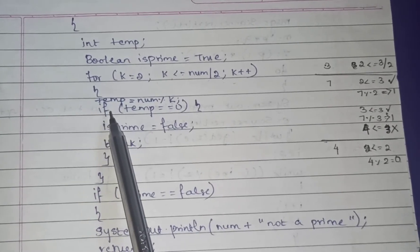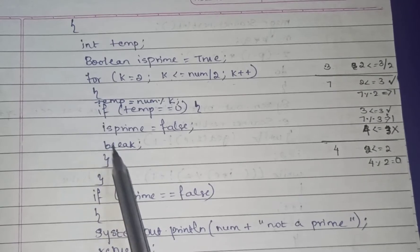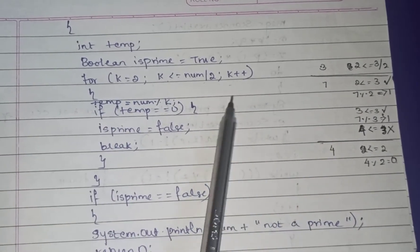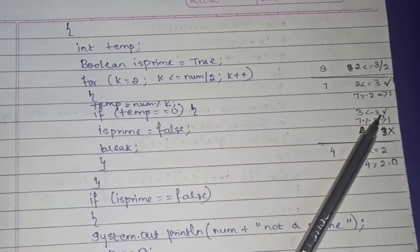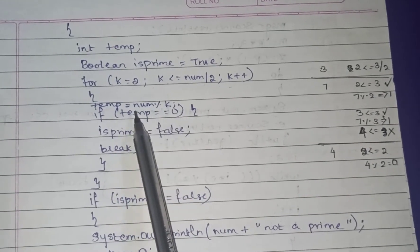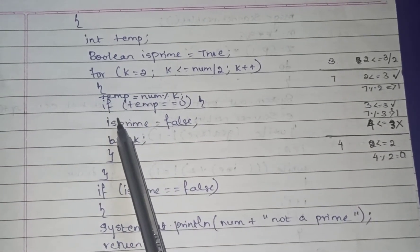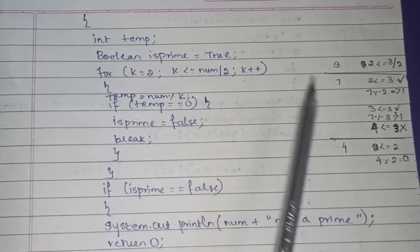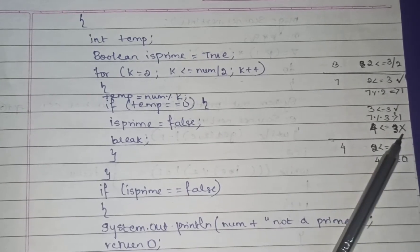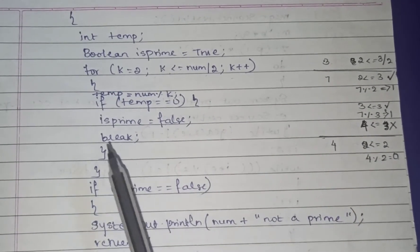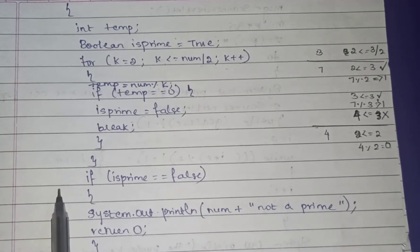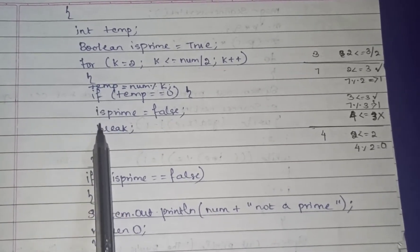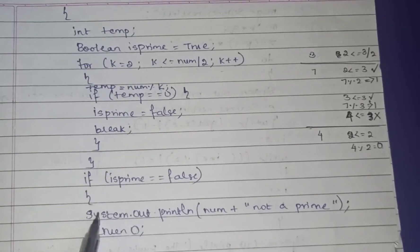The loop continues: k increments to 3, and 3 <= 3 is true. temp = 7 mod 3 = 1, which is not 0, so we skip the if block again. When k = 4, the condition 4 <= 3 is false, so the loop exits. Since is_prime was never set to false, the check 'if is_prime == false' fails, and we go to the else part.